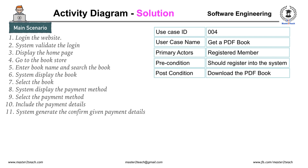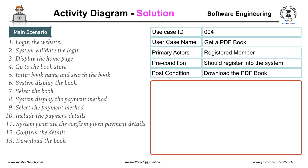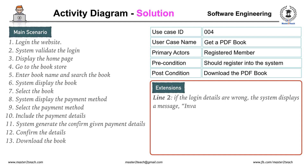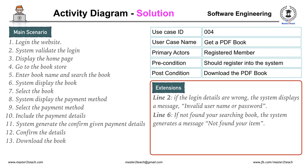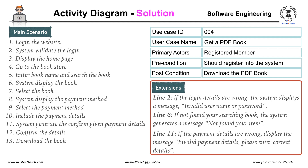System generates the confirmation given payment details, confirm the details, download the book. The extensions or alternatives are: in line number 2, if the login details are wrong, the system displays the message 'invalid username or password.' In line number 6, if the search book is not found, the system generates a message 'not found your item.' In line number 11, if the payment details are wrong, display the message 'invalid payment details, please enter the correct details.'